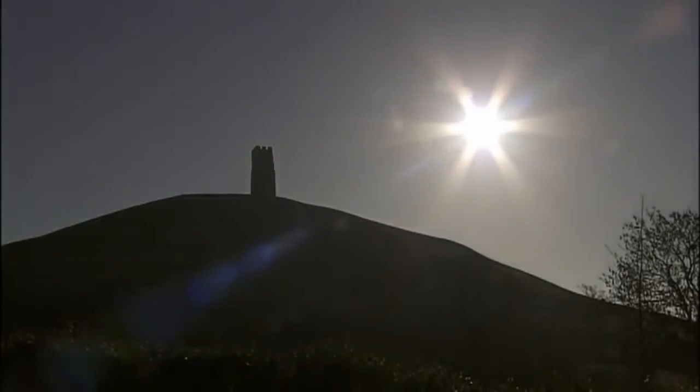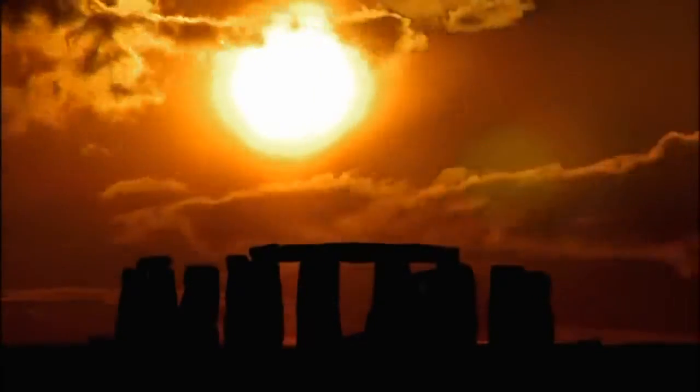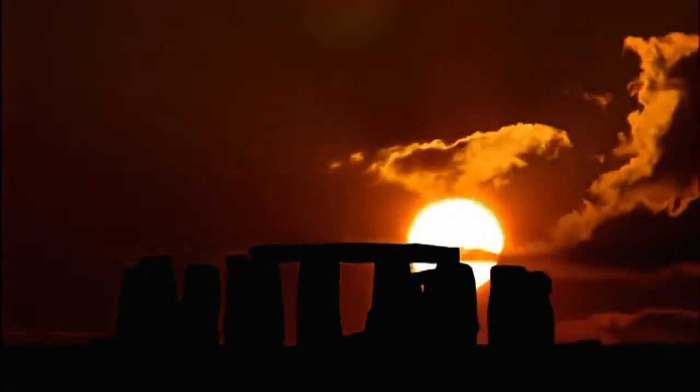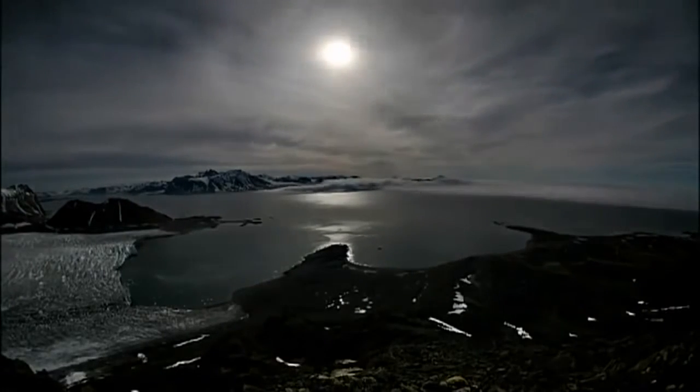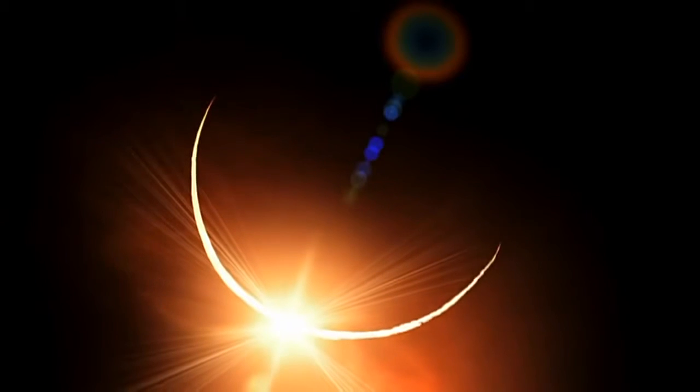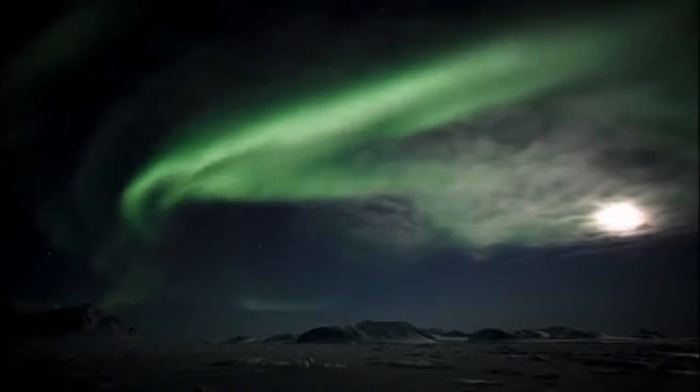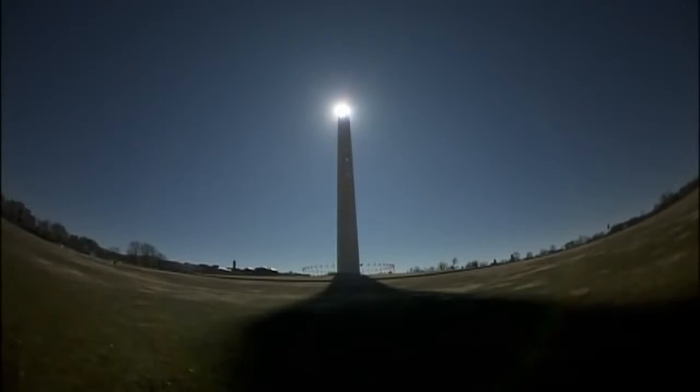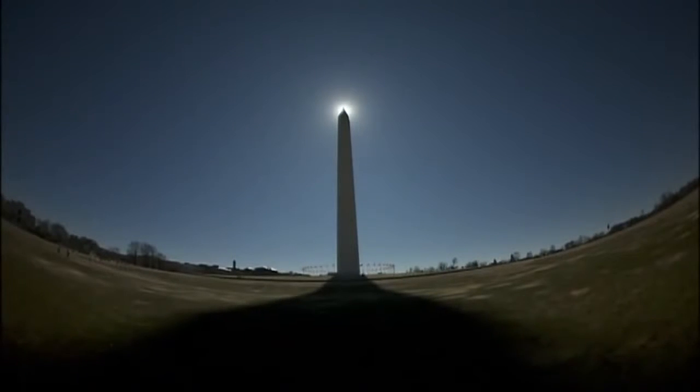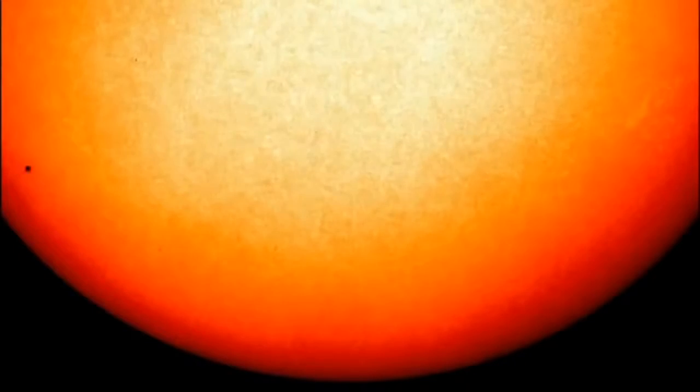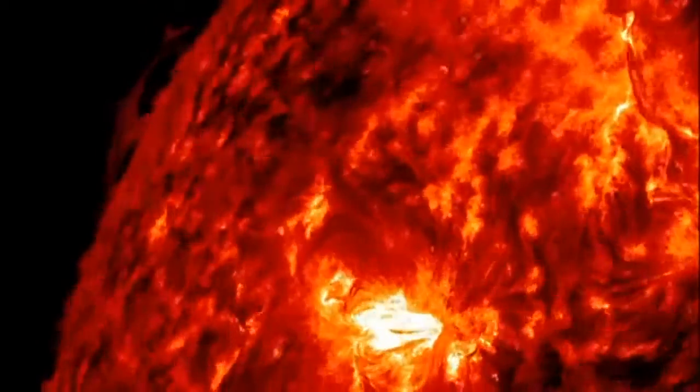We've gazed at the sun since antiquity. We've worshipped it and built entire cultures around its power. We marvel when it's eclipsed during the day. And when its power lights up the night sky with dancing curtains of light, the aurora. Its power and size are awesome. It is so huge, a million Earths could fit inside it. Temperatures at its core soar to 27 million degrees Fahrenheit. It's been shining for over four billion years and will do so for at least four billion more.